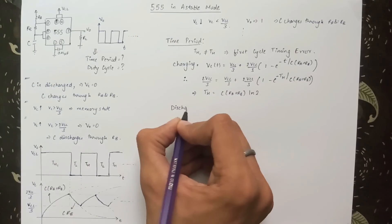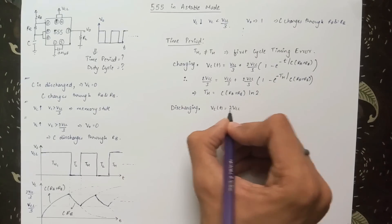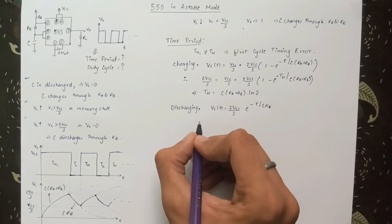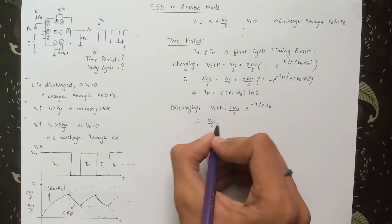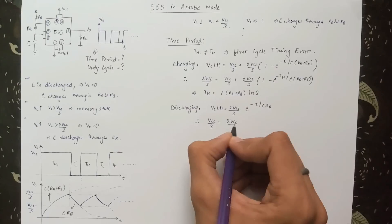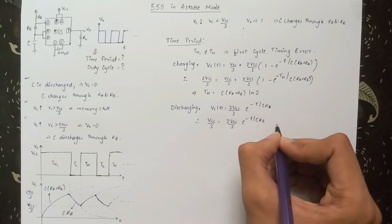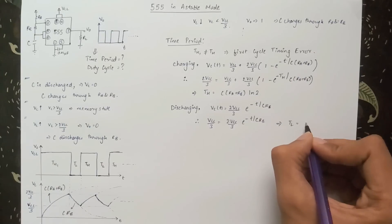Proceeding similarly, the discharging equation of the capacitor can be written as VC(t) equals 2Vcc by 3 times e to the power minus t upon C times RB. Let us take TL as the time taken for capacitor voltage to reach Vcc by 3. Therefore, Vcc by 3 equals 2Vcc by 3 times e to the power minus TL upon C times RB. Solving this equation gives TL equals C times RB times ln 2.